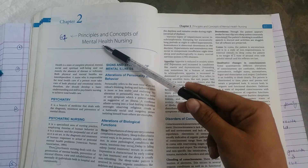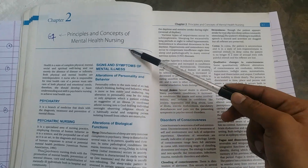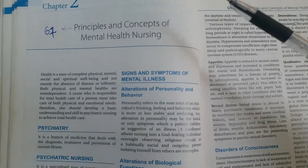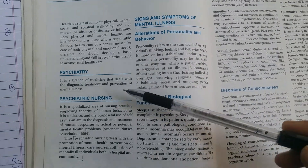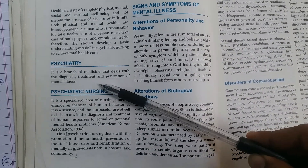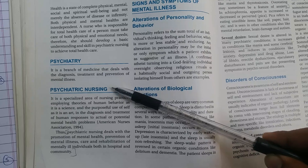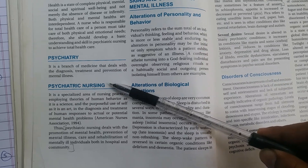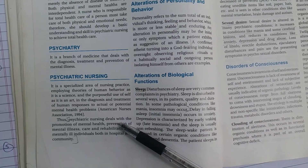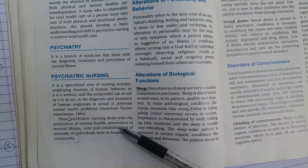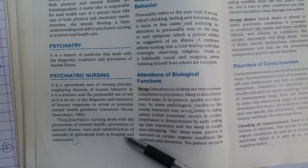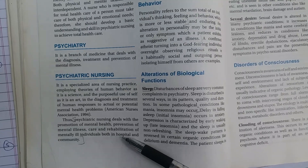Principles, Chapter 2: Principles and Concepts of Mental Health Nursing. Psychiatry is a branch of medicine that deals with the diagnosis, treatment, and prevention of mental illness. Psychiatric nursing deals with the promotion of mental health, prevention of mental illness, care, and rehabilitation of mentally ill individuals.